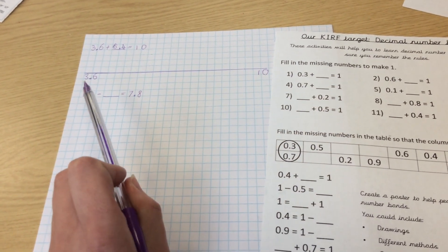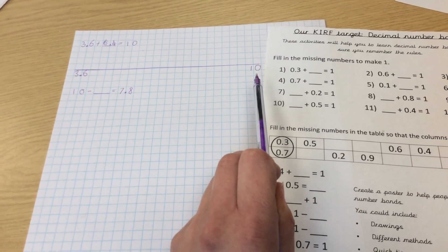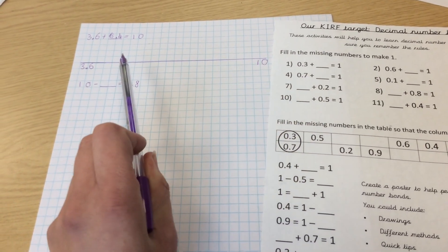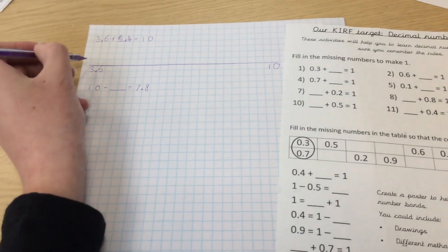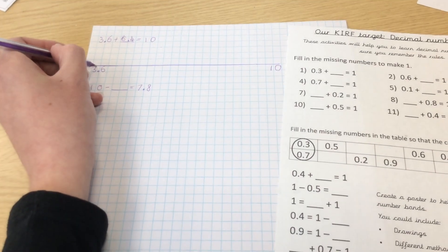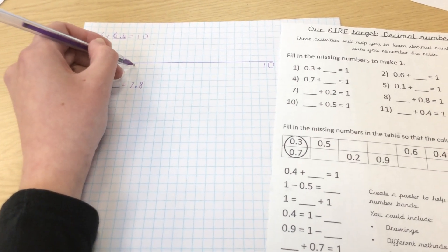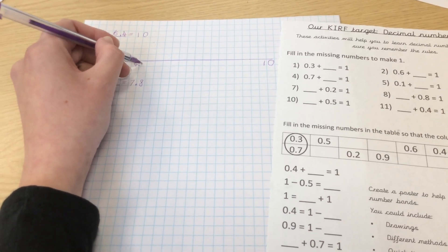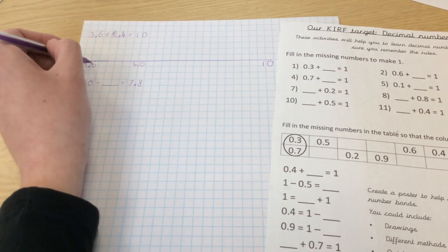I'm going to do a series of jumps along my number line to get to my final number, and then across the top of my number line that will show me what our missing numbers are. So if I'm going to start at 3.6, the nearest whole number that I'm going to jump to is 4.